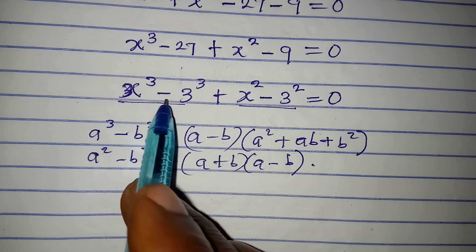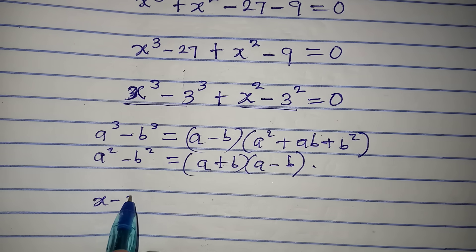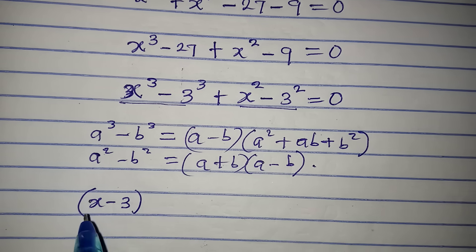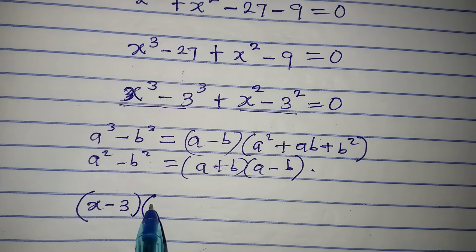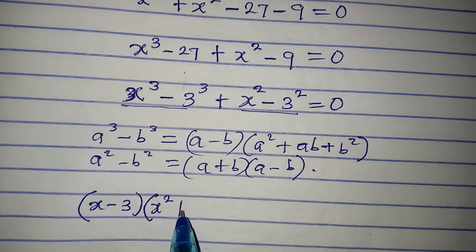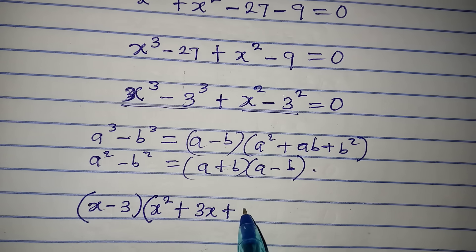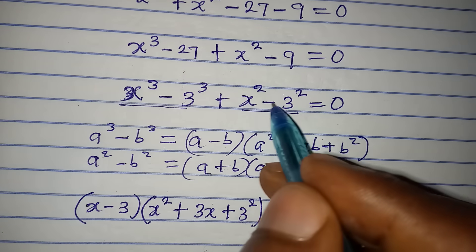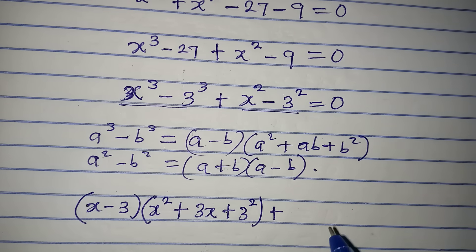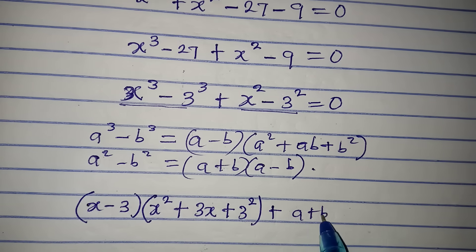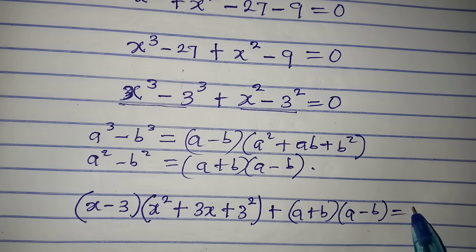So x to the power of 3 minus 3 to the power of 3 will now be x minus 3, close the bracket, and then in brackets: a squared becomes x squared, plus ab is 3 times x which is 3x, then plus b squared becomes 3 squared. Close this bracket. Then plus x squared minus 3 squared — applying difference of two squares, it becomes x plus 3 times x minus 3, and the whole of this equals 0.